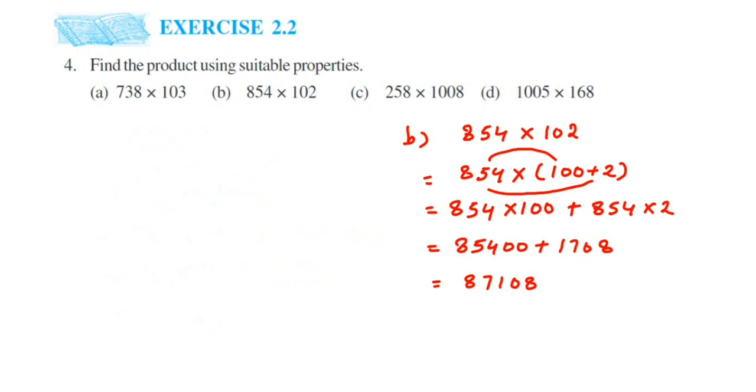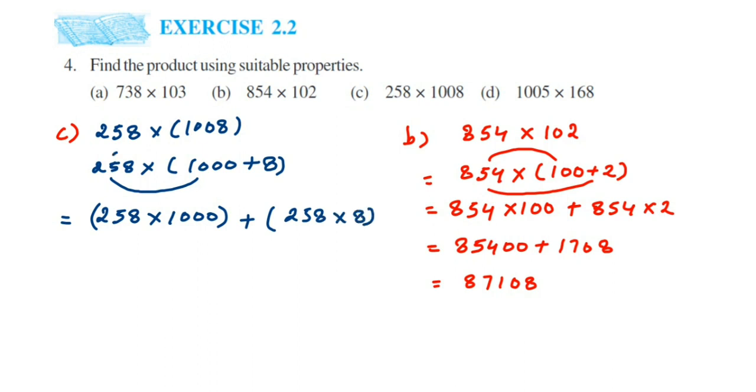Problem C: we have 258 × 1,008. Same thing—split 1,008, so 258 × (1,000 + 8). Open the brackets: 258 × 1,000 plus 258 × 8. When you multiply 258 with 1,000 you get 258,000. Multiply 258 with 8 to get 2,064. Add these to get 260,064.